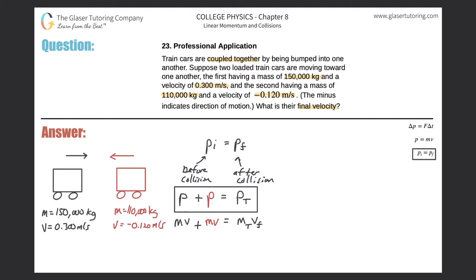Let's keep going. The question asks for the final velocity. Here's the final velocity value, and now what I can do is divide the total mass on out. So my formula works out to be: the mass of the black train times the velocity of the black train, plus the mass of the red train multiplied by the velocity of the red train, all divided by the total mass of the two trains together. This is basically the formula we need, so let's start plugging in the values and solve.